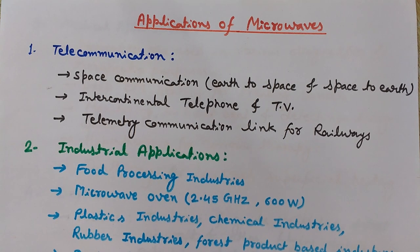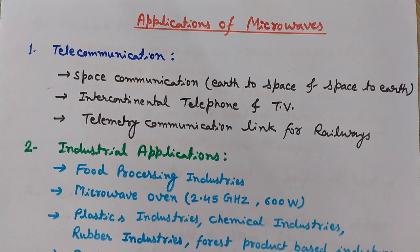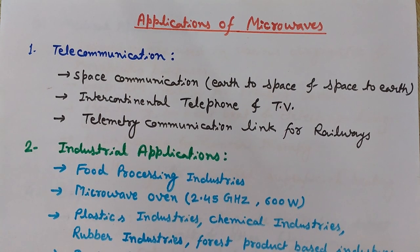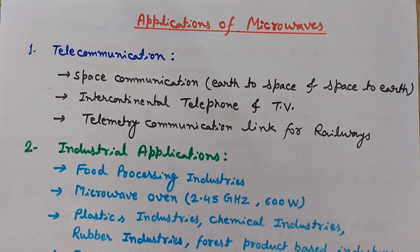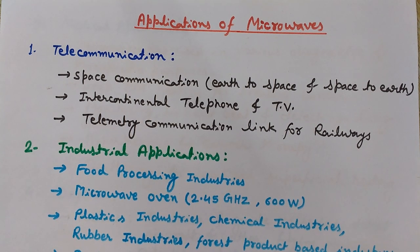Here we are dealing with the range of 1 gigahertz to 1000 gigahertz. They are called microwaves because 'micro' comes from the word tiny or small. The small thing here is the wavelength. The wavelength of microwaves is 1 foot or less — that is, less than 30.5 centimeters, which is nearly equal to 1 foot.